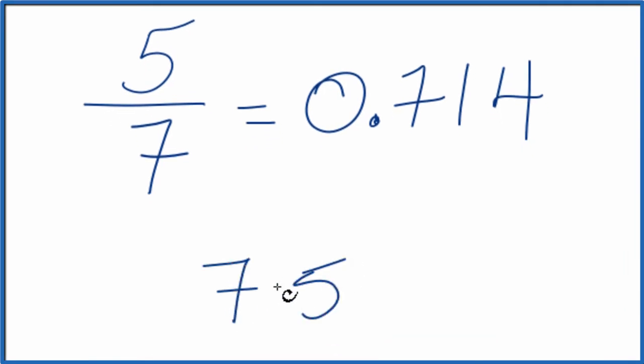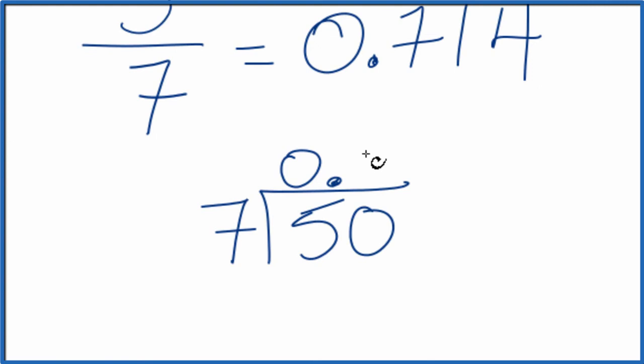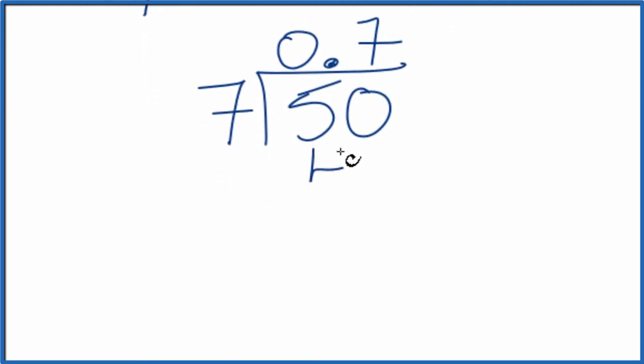You can see how many times 7 goes into 5. 7 doesn't go into 5 so we're going to call this 50 and make this 0. So now 7 times 7 that's 49.